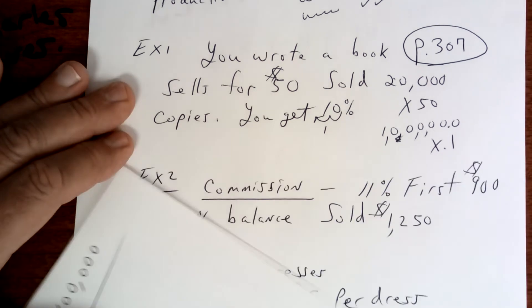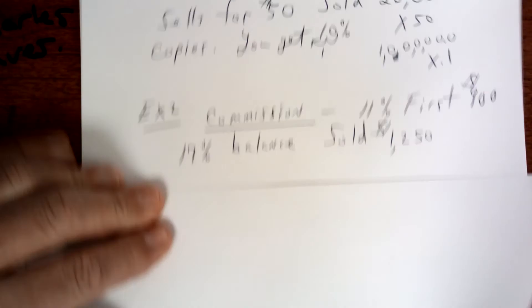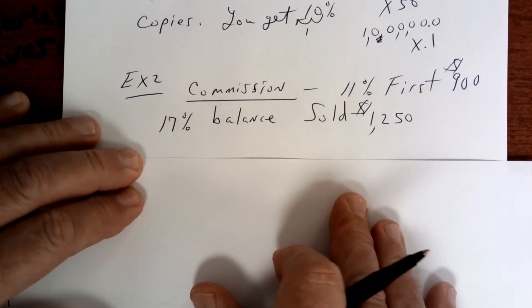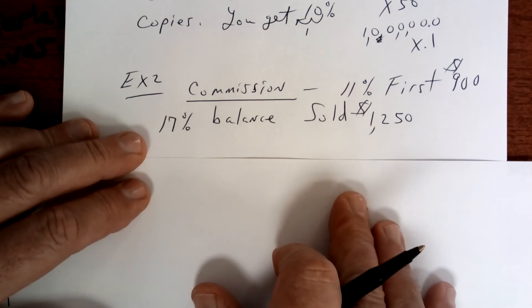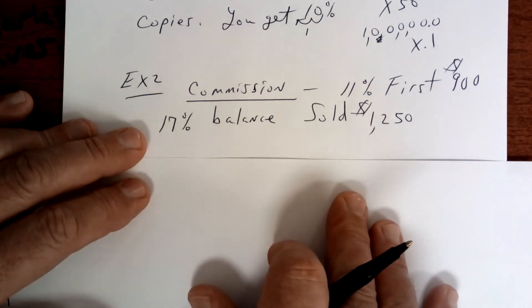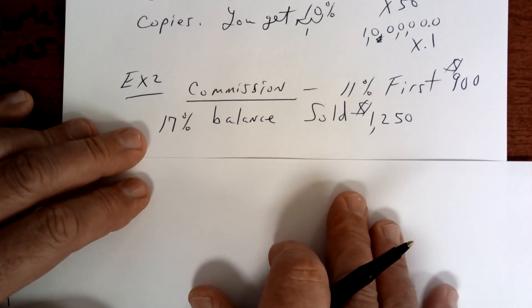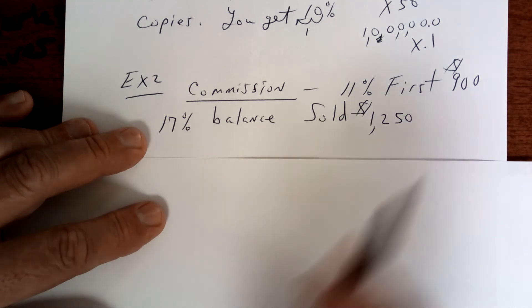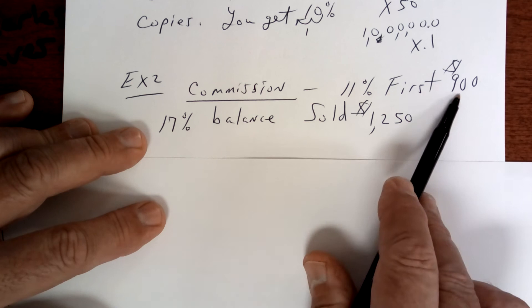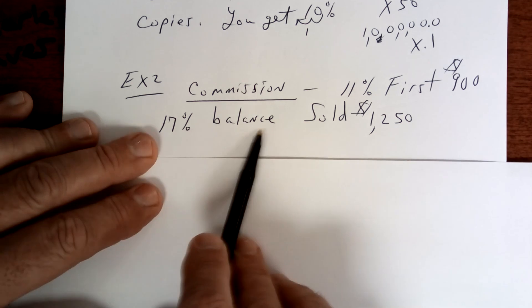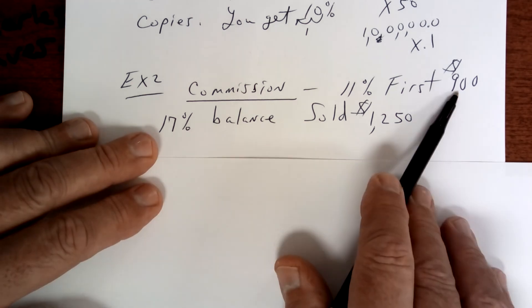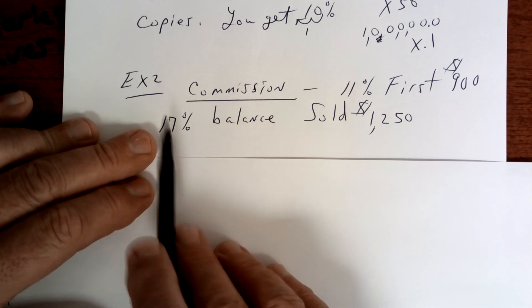Number two. Copy this down. Commission. So if you have a business, you want to have some incentive for your workers. You get 11% of the first 900 and then 17% over that. Once you go over 900, you're in the bonus round because the money's better.